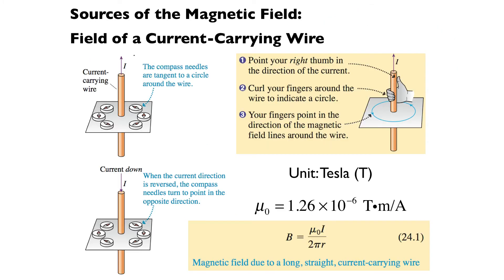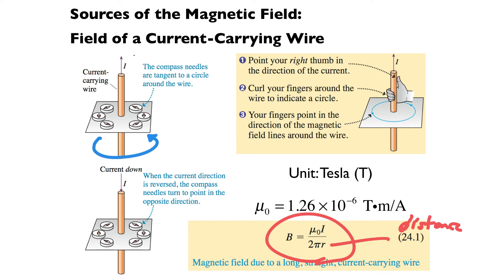Now let's look at the magnetic field from a current-carrying wire. The magnitude of the field is given by the relationship where R is the distance from the wire. The magnetic field lines are actually little circles around the wire. The sense of the circle is given by the right-hand rule for fields: point your thumb in the direction of the current and your fingers curl in the direction the magnetic field lines go. A circle at radius R from the center of the wire has a magnetic field given by that expression. Mu-zero, which you'll see in many expressions, is just a constant.